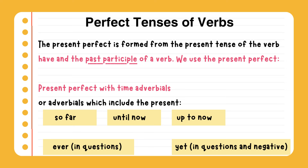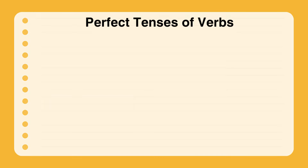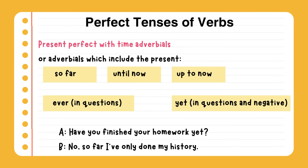Present perfect with time adverbials which include the present. The signal words are: so far, until now, up to now, ever (in questions), yet (in questions and negative). Examples: Have you ever seen a ghost? Where have you been up to now? Have you finished your homework yet? No. So far, I've only done my history.